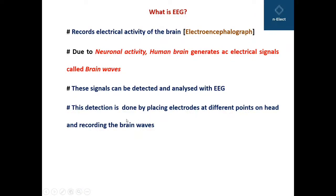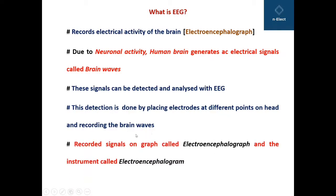This detection is done by placing electrodes, that is sensors, at different points on the head and recording the brain waves. The recorded signals on the graph are called an electroencephalogram, and the device or instrument which records it is also called an electroencephalogram.